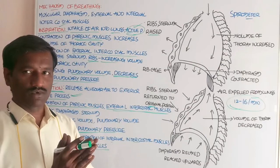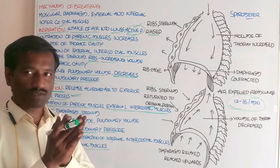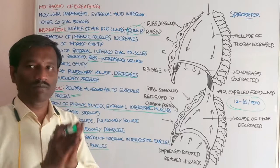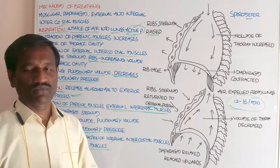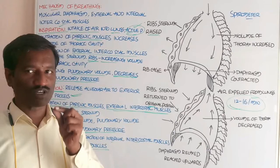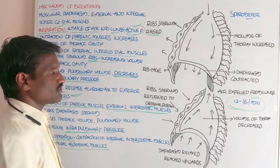There are 12 pairs of ribs in human beings. Between the ribs, there are muscles called external intercostal muscles and internal intercostal muscles. These muscles help in the mechanism of breathing. The two main types of muscles that help in breathing are: external intercostal muscles, present between the ribs, and the phrenic muscle, which is present in the dome-shaped diaphragm.